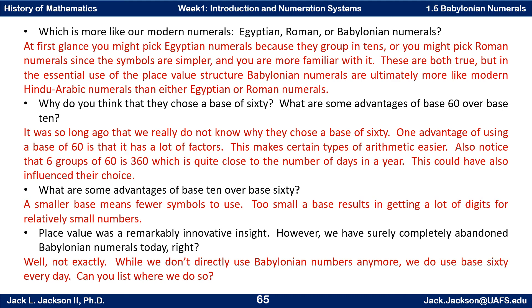Why did they choose a base of 60? We really don't know. One advantage of using a base of 60 is that it has a lot of factors, which makes certain types of arithmetic easier — some of the arithmetic they did with fractions. Also, notice that six groups of 60 is 360, which is quite close to the number of days in the year; that could have influenced their choice. Another advantage is that you can write large numbers with relatively few digits when using such a large base.